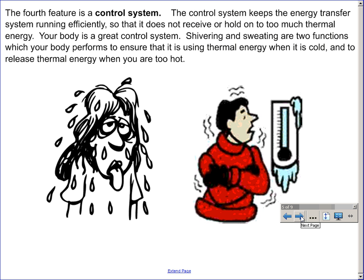The fourth feature is the control system. The control system keeps the energy transfer system running efficiently so that it does not receive or hold on to too much thermal energy. Your body is a great control system. Shivering and sweating are two functions which your body performs to ensure that it is using thermal energy when it is cold, and releasing thermal energy when you are too hot.